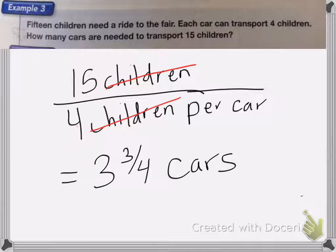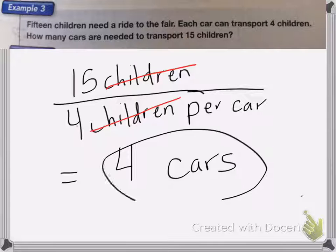Now I cannot have three quarters of a car. But in this case, I don't want to round down like I did before because then that would mean that some of the kids won't go to the fair and all the kids want to go to the fair. So I'm going to round my answer up to four cars. So that way, all the children can go.